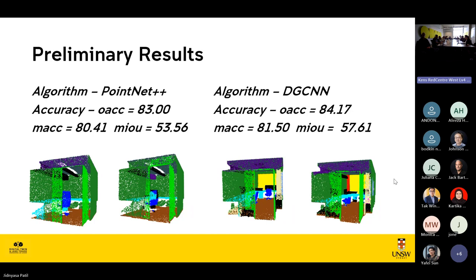We tried different algorithms including PointNet, PointNet++, and DGCNN. PointNet++ is an algorithm developed after PointNet that focuses more on local areas. DGCNN is a graph-based model — graphs are used nowadays to find connections between points.